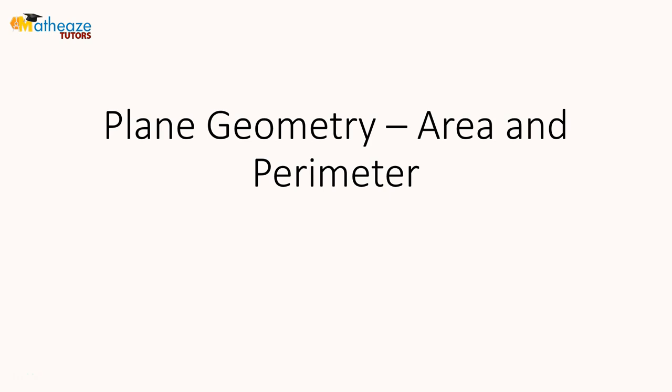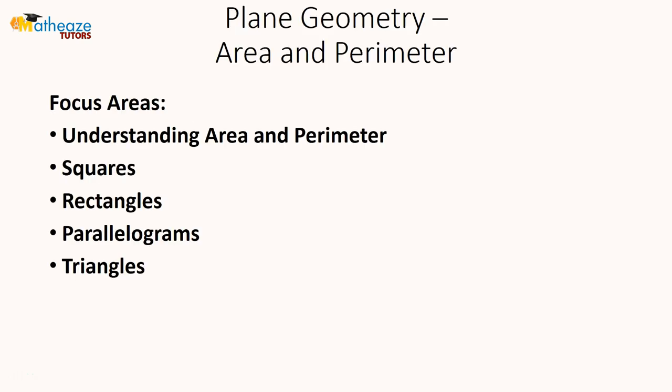Now let's look at plane geometry with a focus on area and perimeter. We're going to look at understanding what area means and what perimeter means, and we're going to apply that to squares, rectangles, parallelograms, and triangles.